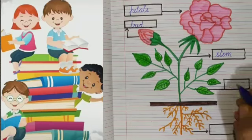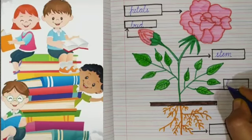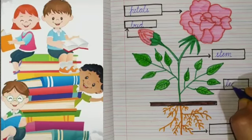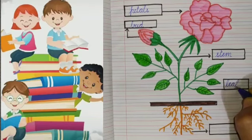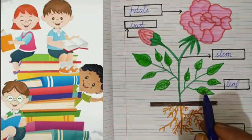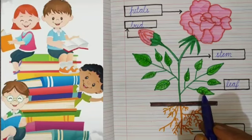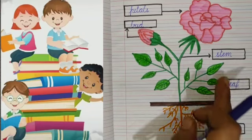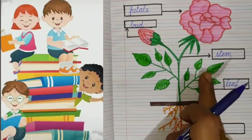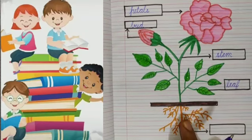Here leaf. Write down: L-E-A-F, leaf. Students, here we have one leaf, that's why we say leaf. When we count all the leaves, then we say leaves. See, which part is this?